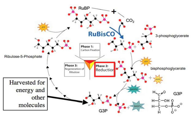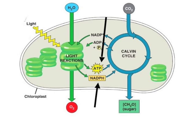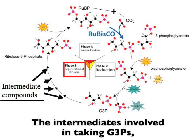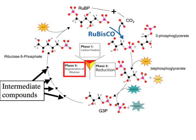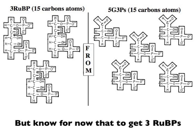Glyceraldehyde-3-phosphate, known as G3P, is a product cells can harvest. A light reaction's NADPH and ATP are needed to make CO2 into organic energy. But to complete the cycle, we must now regenerate the starting point of Calvin's cycle — ribulose bisphosphate. The intermediates involved in recombining G3Ps into RuBPs are too much for an intro biology course. But know for now that it takes 3 RuBPs from 5 G3Ps, using 3 ATPs.